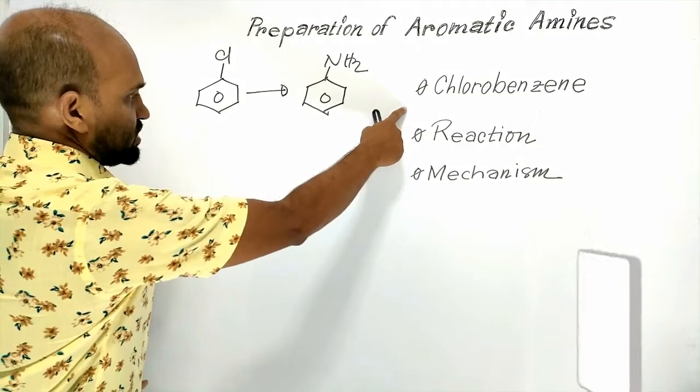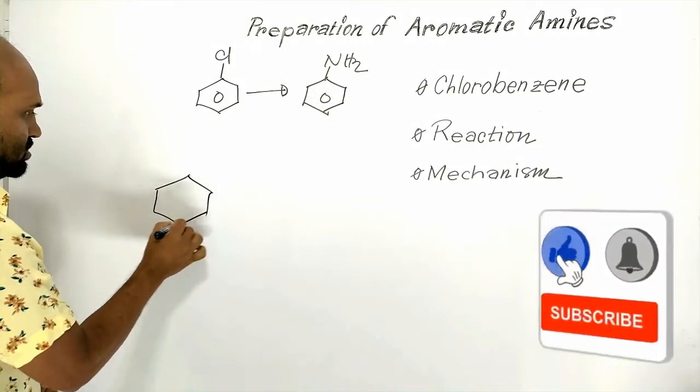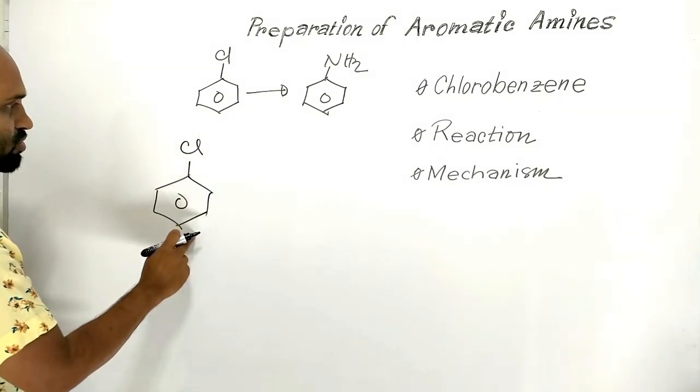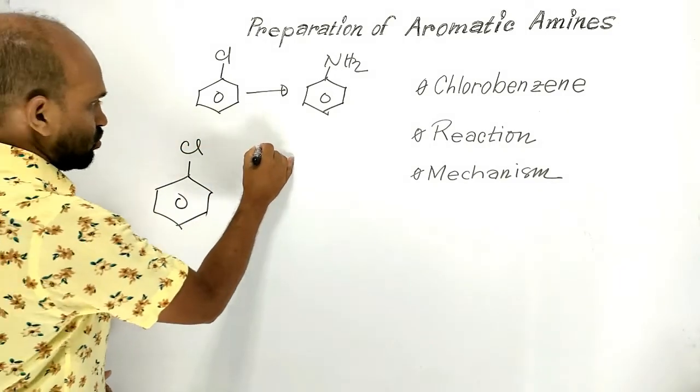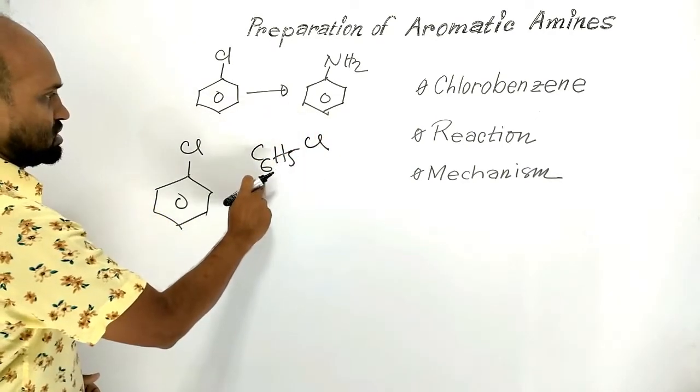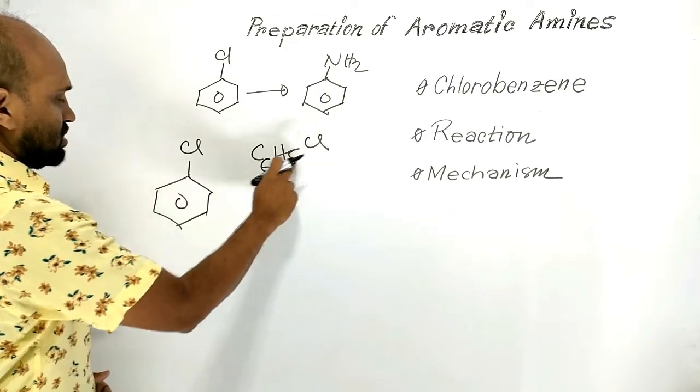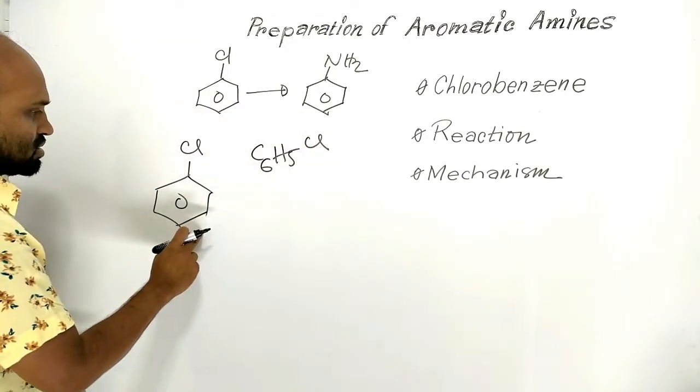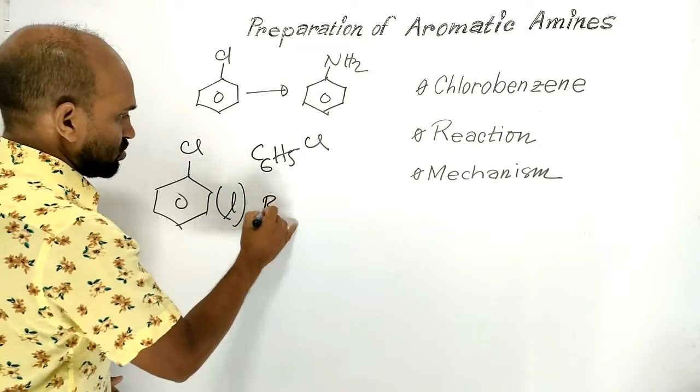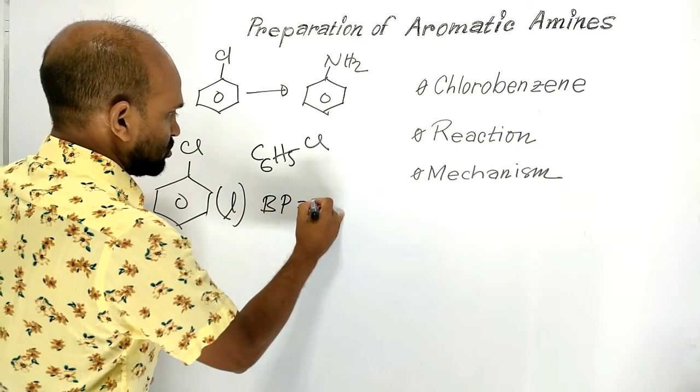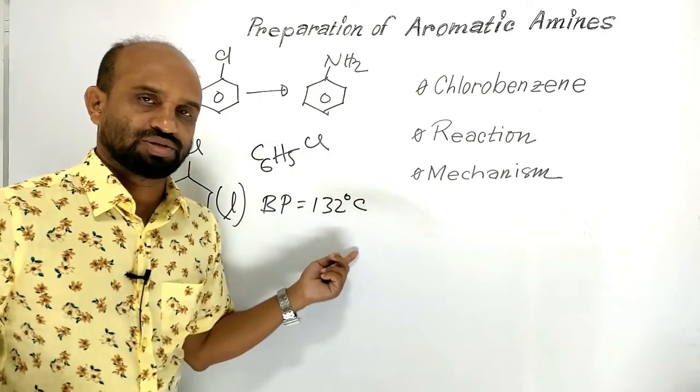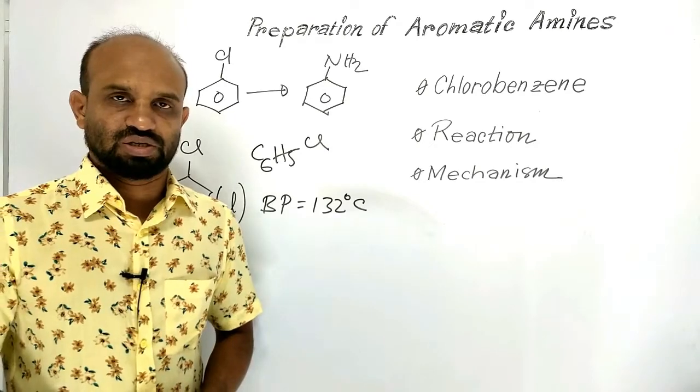Chlorobenzene. This is the structural formula of chlorobenzene. Molecular formula is C6H5Cl. This is a colorless liquid. Its boiling point is around 132 degrees Celsius. This is about chlorobenzene.